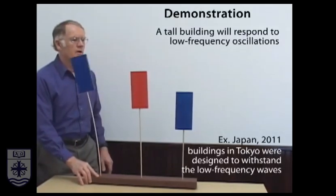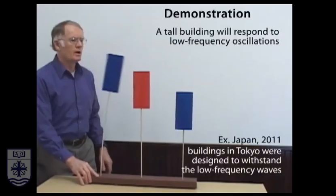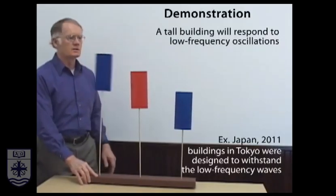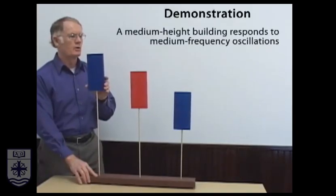So if I move the base slowly back and forth, I can get the tall building to oscillate where the intermediate and short buildings are not moving.